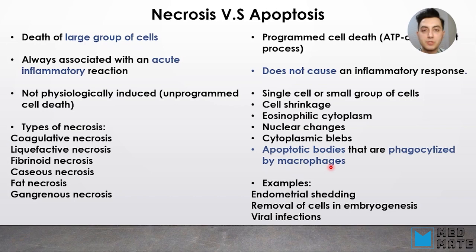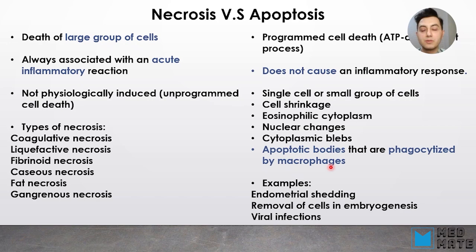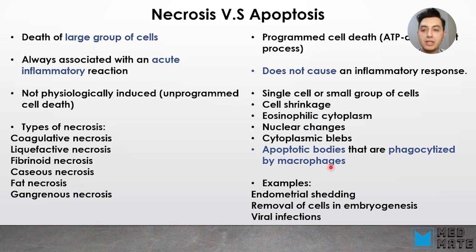Now we are comparing two types of cell death: necrosis and apoptosis. Necrosis is death of a large group of cells, while apoptosis happens to a single cell or a small group of cells. Necrosis is always associated with an acute inflammatory reaction, while apoptosis does not cause an inflammatory reaction. Necrosis is unprogrammed cell death, while apoptosis is programmed cell death that can happen due to physiological reasons and is an ATP-dependent process. Examples of necrosis include coagulative, liquefactive, fibrinoid, caseous, fat, and gangrenous necrosis.